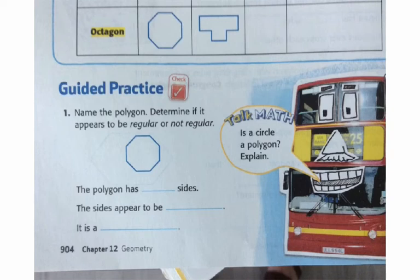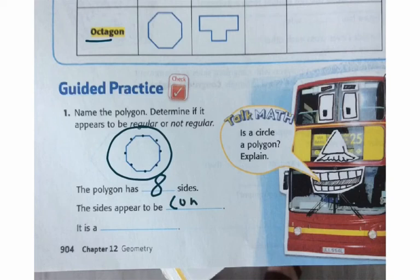On the guided practice, guys, I need you to really be doing it along with me. What polygon is this? We need to count the sides. One, two, three, four, five, six, seven, eight. So that means it's called an octagon, right? Because we already decided that eight sides are called an octagon. The sides appear to be the same, or congruent. In geometry, we use this word congruent, which means equal. So therefore, it is a regular octagon.